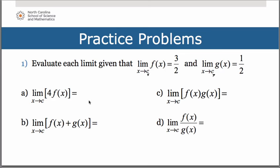In letter a, if we want the limit of 4 times the function f of x as x approaches c, that simply is going to be 4 times the limit of the function, which is 3 halves, which in the end gives us 6.